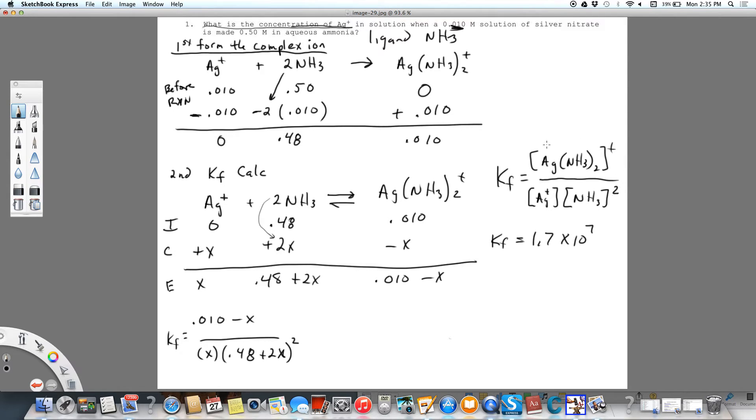Again, we're taking these values and plugging in our values at equilibrium. We're going to go ahead and say that x is small. So we're going to neglect on top where we're subtracting a very small number and adding a very small number on the bottom.